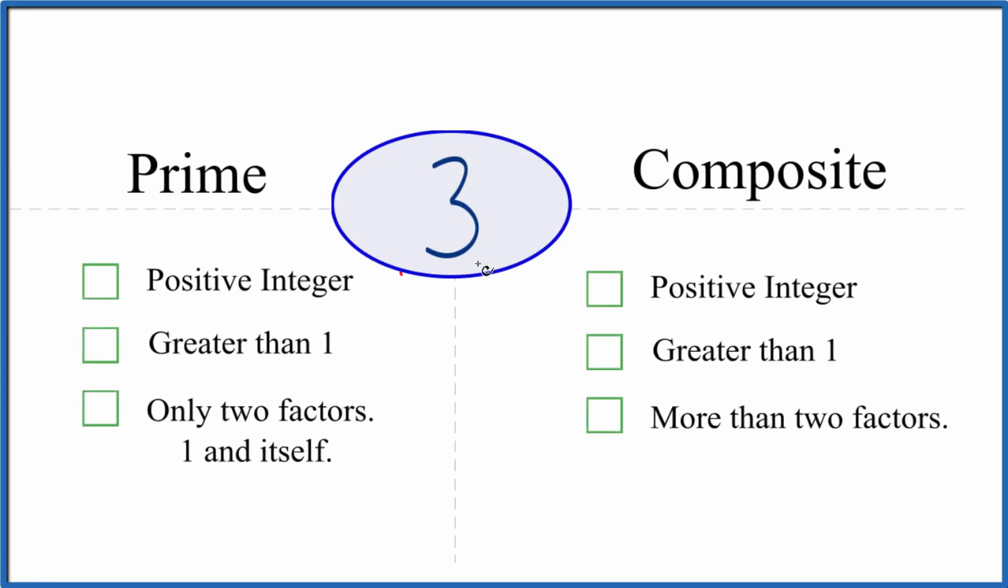So how can you tell whether 3 is a prime number or a composite number? Let's look first if 3 is prime.